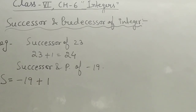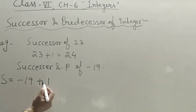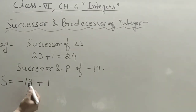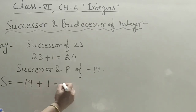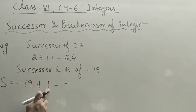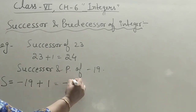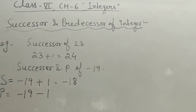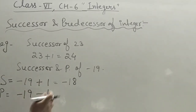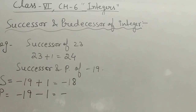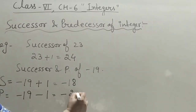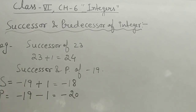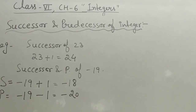Applying the rule: one number is positive and one is negative, so the sign is of the bigger number. 19 is greater than 1, so the sign is minus, and 19 minus 1 equals 18 — successor of minus 19 is minus 18. For the predecessor, we do minus one. Both are negative, so the answer is negative: 19 plus 1 equals 20, predecessor of minus 19 is minus 20.